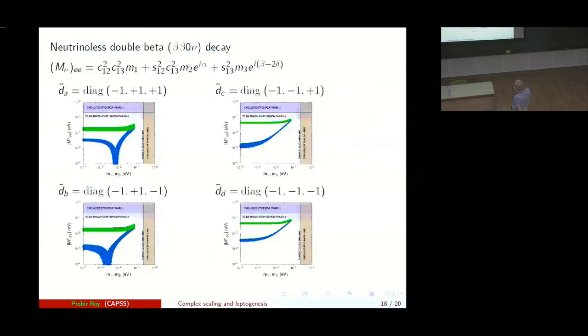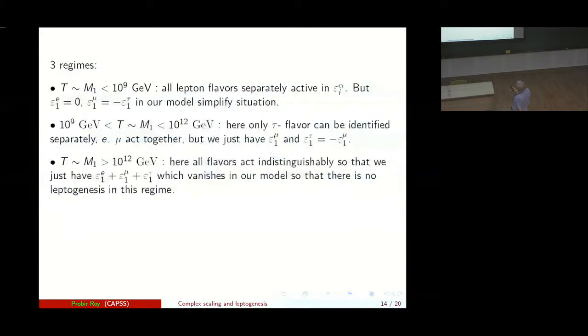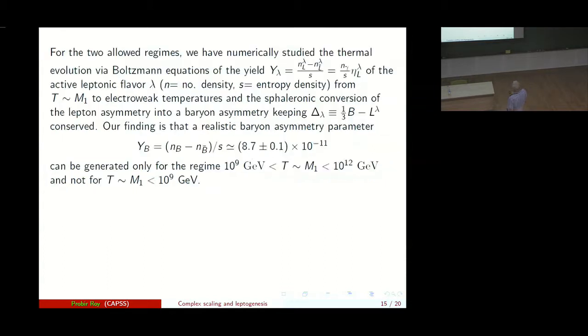Or you can have M_1 greater than 10 to the 12 GeV. However, here the problem is, all flavors act indistinguishably so we just have epsilon_1E plus epsilon_1_mu plus epsilon_1_tau but this vanishes in our model. So you can't have leptogenesis if you have M_1 greater than 10^12 GeV. You are restricted only to the first two regimes. Now, we work out the Boltzmann equations. I will not go into the details of the Boltzmann equations here.